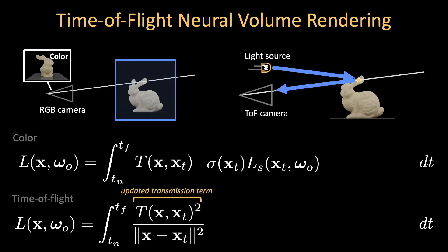First, because light is attenuated as it travels from a light source into the volume and out of the volume, the transmittance for our time-of-flight volume rendering is squared. We must also include a term to model the inverse square falloff of the time-of-flight light source. Volume density we assume to be the same. This lets us share reconstruction information between color and time-of-flight sensors.